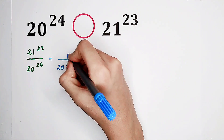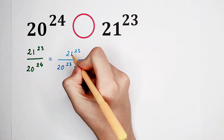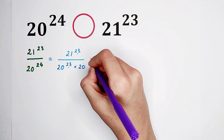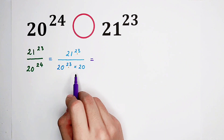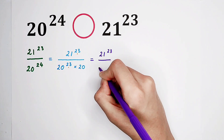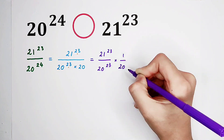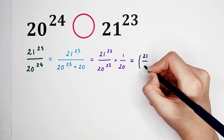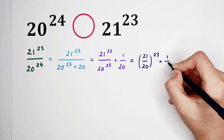Our numerator is still 21 to the power of 23. Why shall we do this? Because then you can see: here the exponent is 23, and here the exponent is also 23 — same exponent. Now this factor of 20 jumps out from the denominator. So we can write this as 21 to the power of 23 over 20 to the power of 23, then times 1 over 20. Same exponent: 23 and 23. So it is (21 over 20) all to the power of 23, then times 1 over 20.